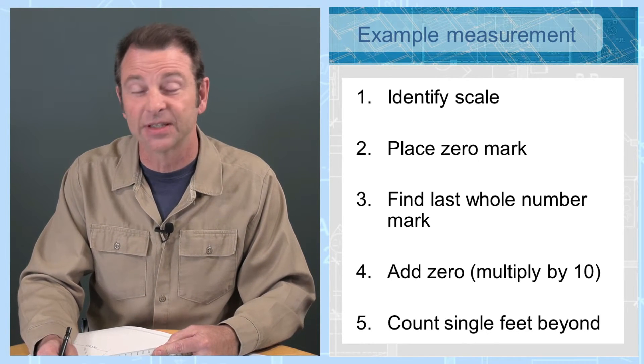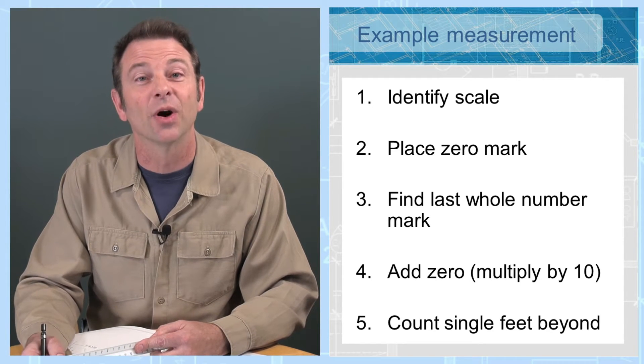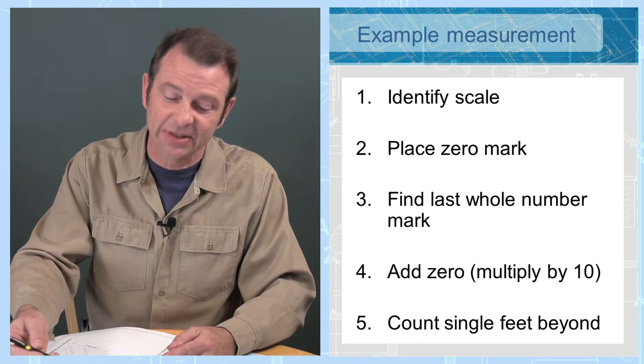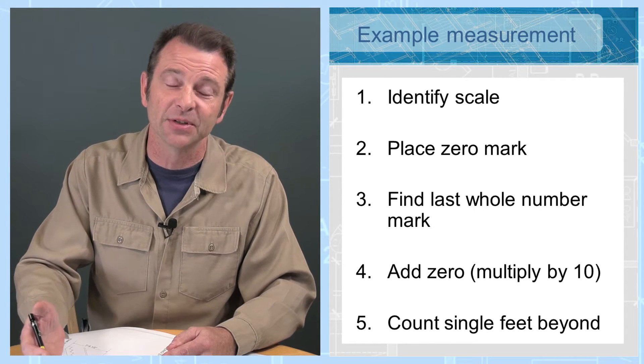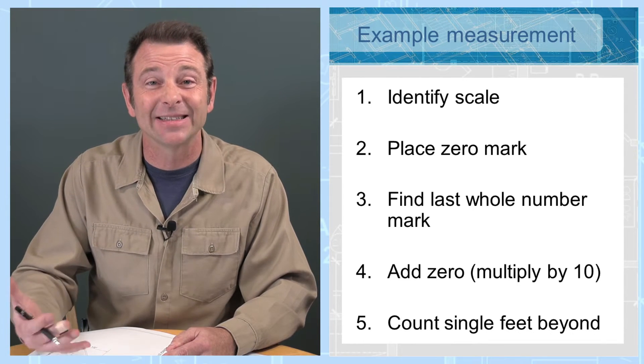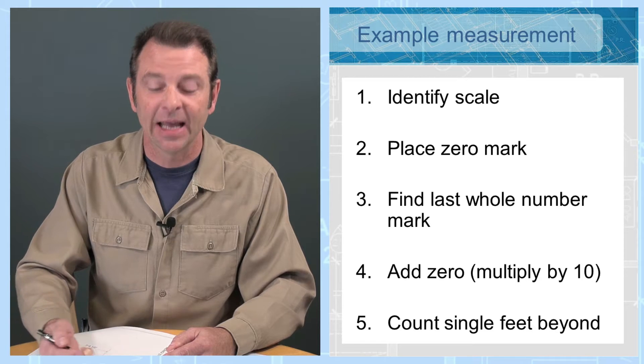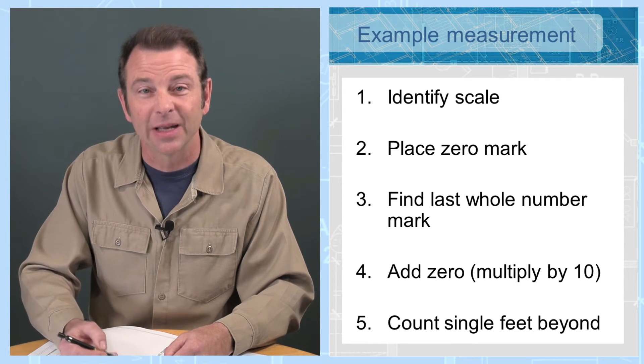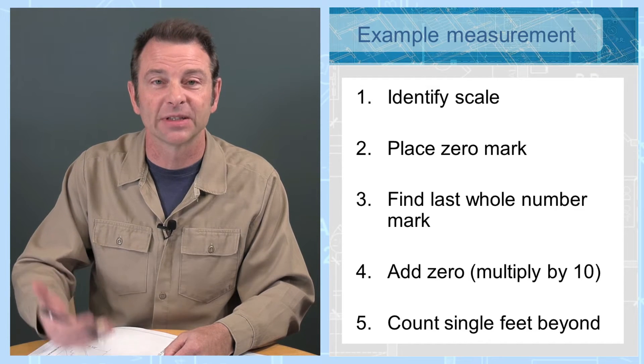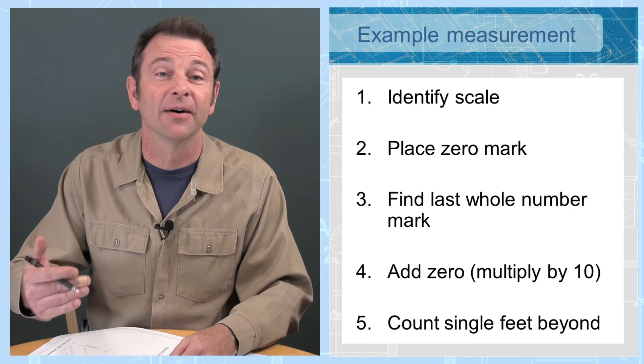Next, find your zero mark on this scale. It's typically on that end where your scale is marked. Then you are going to measure down the scale away from your zero, looking for your last whole number. You're going to add zero to that number, which is multiplying that number times 10. And then you're going to count up your individual marks beyond that mark to come up with your single feet. This will give you your total measurement of feet.